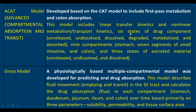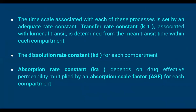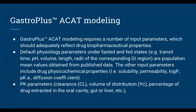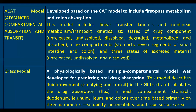Coming to mechanistic models as discussed earlier — the ACAT model includes first-pass metabolism and colon absorption. This model includes linear transfer kinetics, non-linear metabolism and transport kinetics, and six states of each compartment: unreleased, undissolved, dissolved, degraded, metabolized, and absorbed. With nine compartments — stomach and seven segments of small intestine plus colon — we can increase the number of components to get more data and use mathematical models.